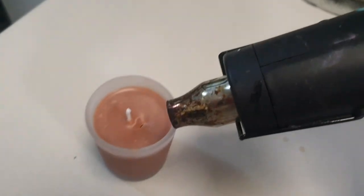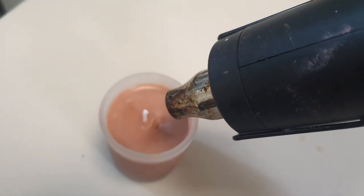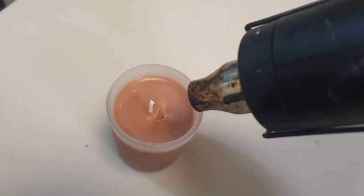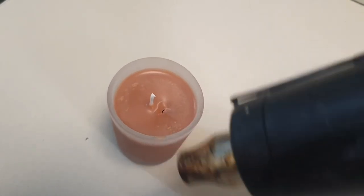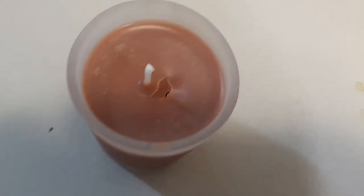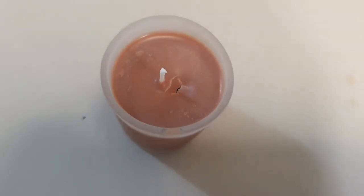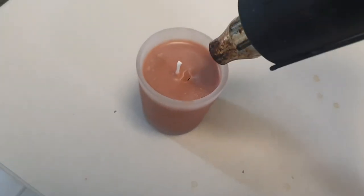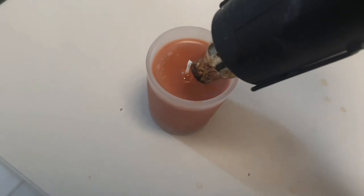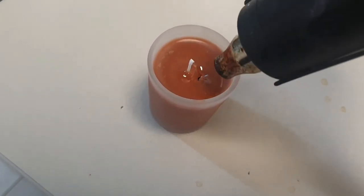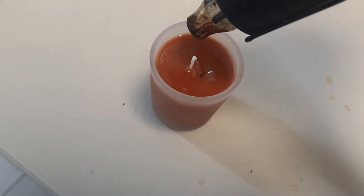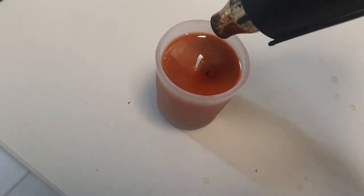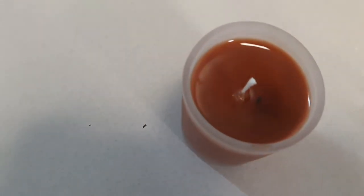What I'm going to do is I'm just going to use the heat gun to melt the top layer of wax to fill in that hole right there, so that it just looks all pretty again. There we go.